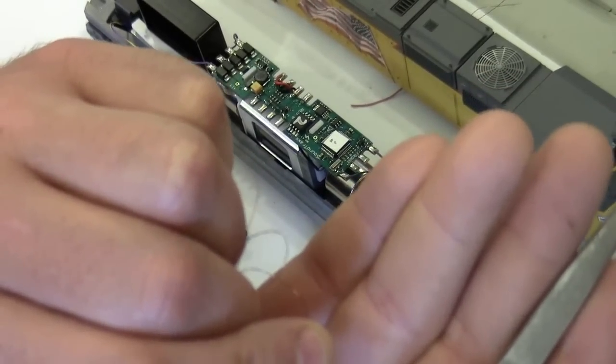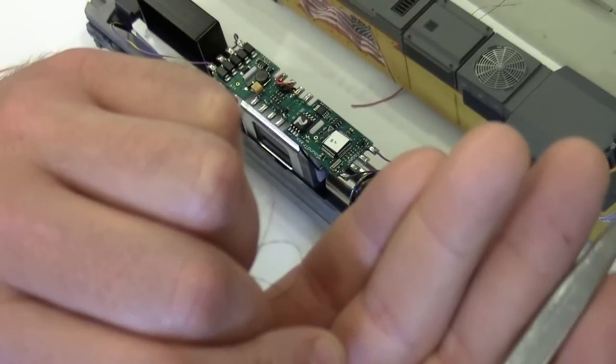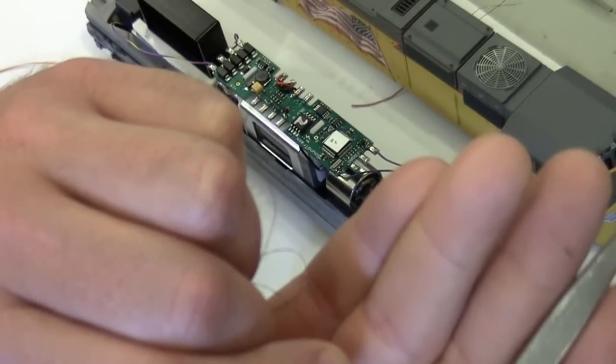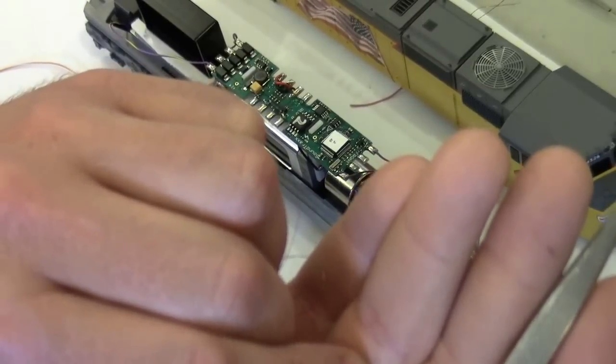I put 0402 surface mount LEDs, and those 0402s are about a quarter to a half the size of the 0603s. So they're very small, and you can fit them in tight places. They work great.